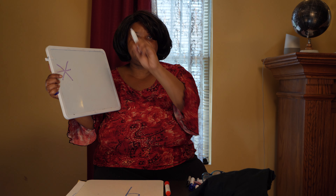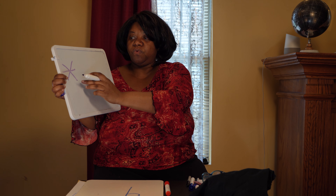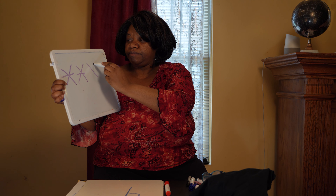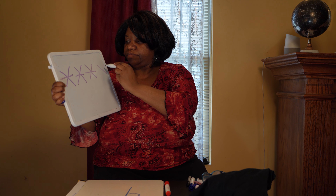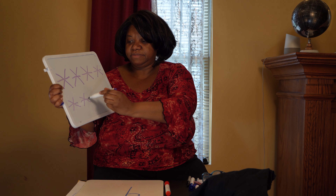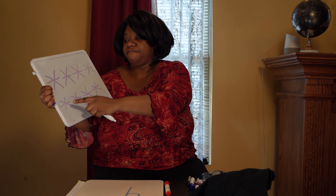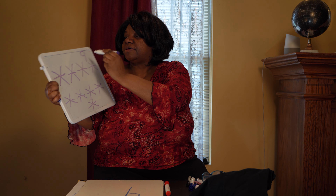Slant to the right, slant to the left, and across in the middle. We're going to make nine. This is one, two, three, four, five, six, seven, eight, nine. Let's count to be sure: one, two, three, four, five, six, seven, eight, nine. I made nine stars!